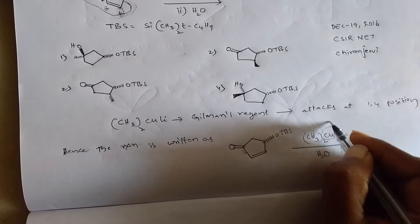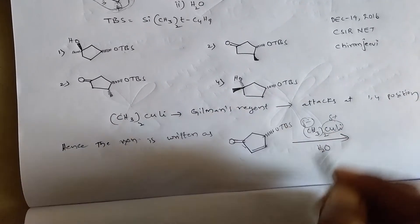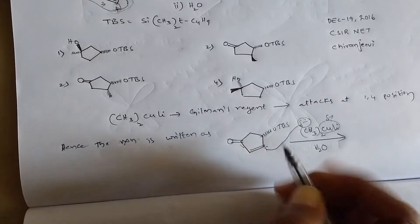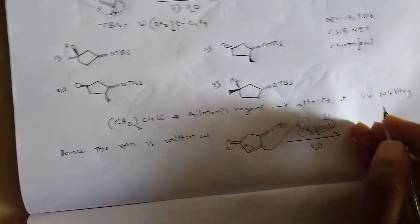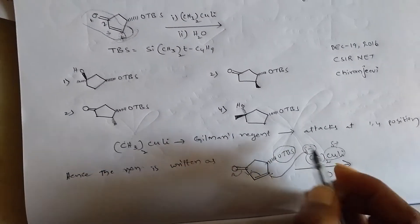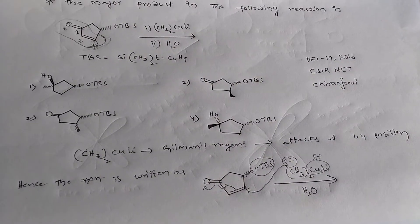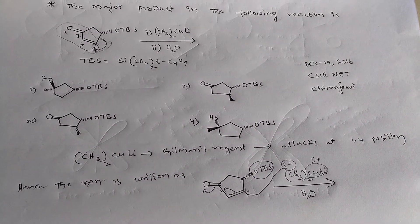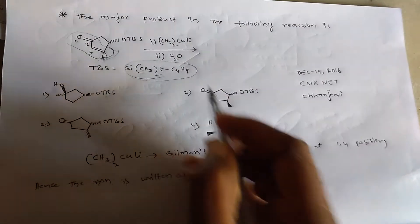These have partially positive charge and the methyl group has partially negative charge. So, this methyl group attacks at 4th position and consider this TBS. TBS means tertiary-butyl-dimethyl-silylene. So this is bulky group, TBS, this is bulky group.